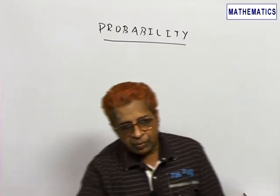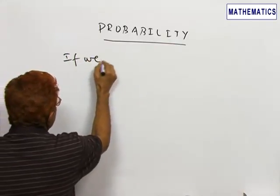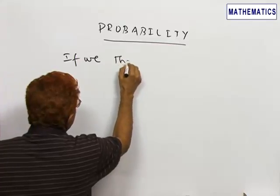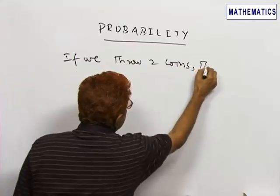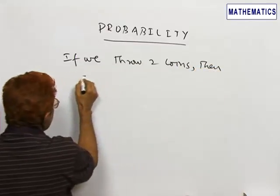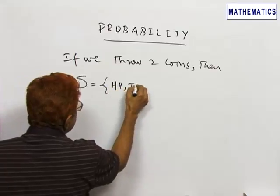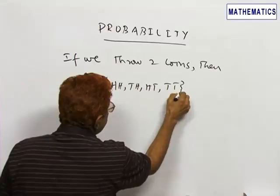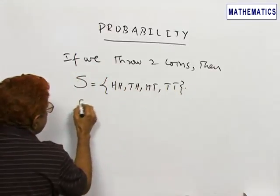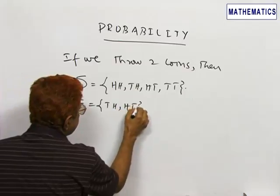For example, if we throw two coins, then sample space S equals HH, TH, HT, TT. E equals TH, HT is an event.